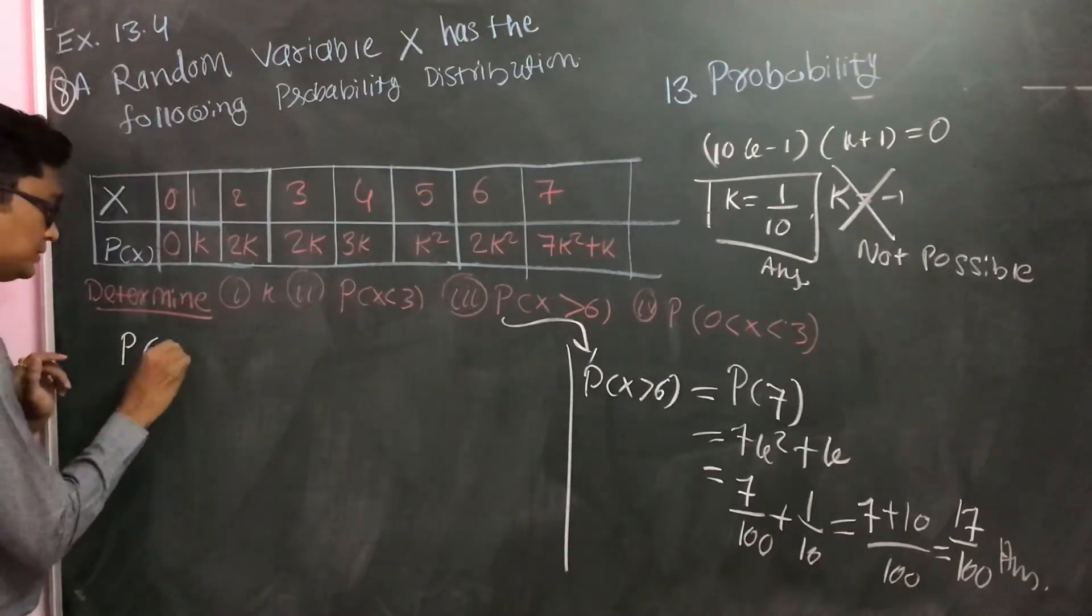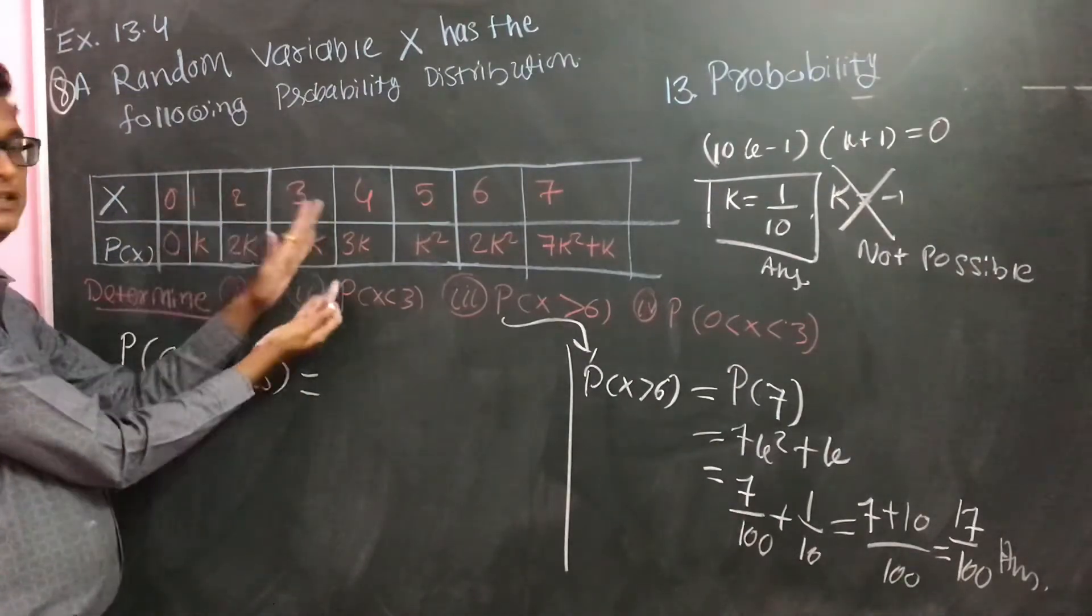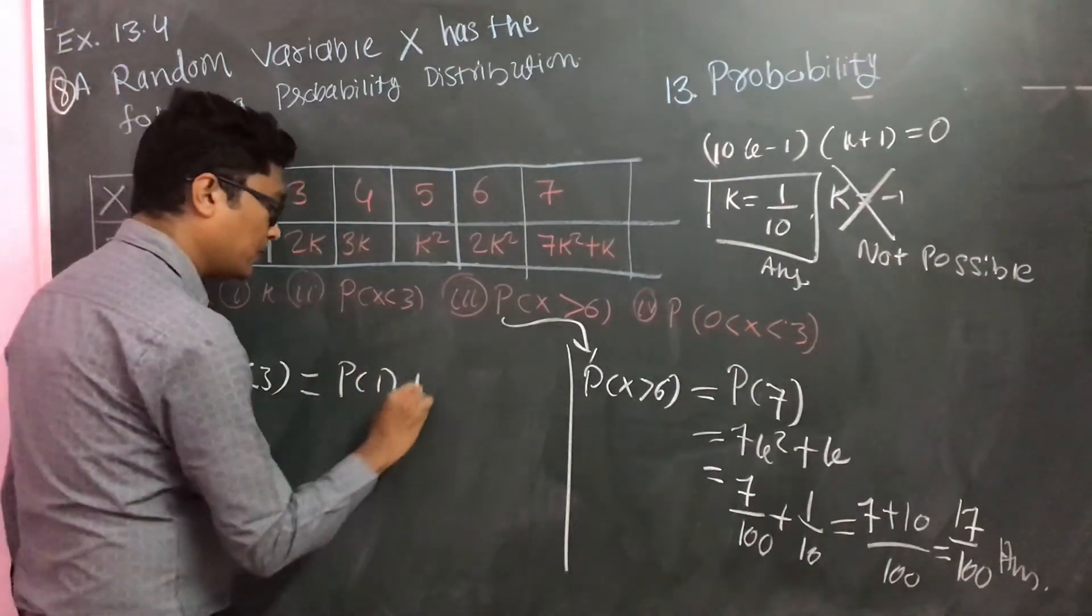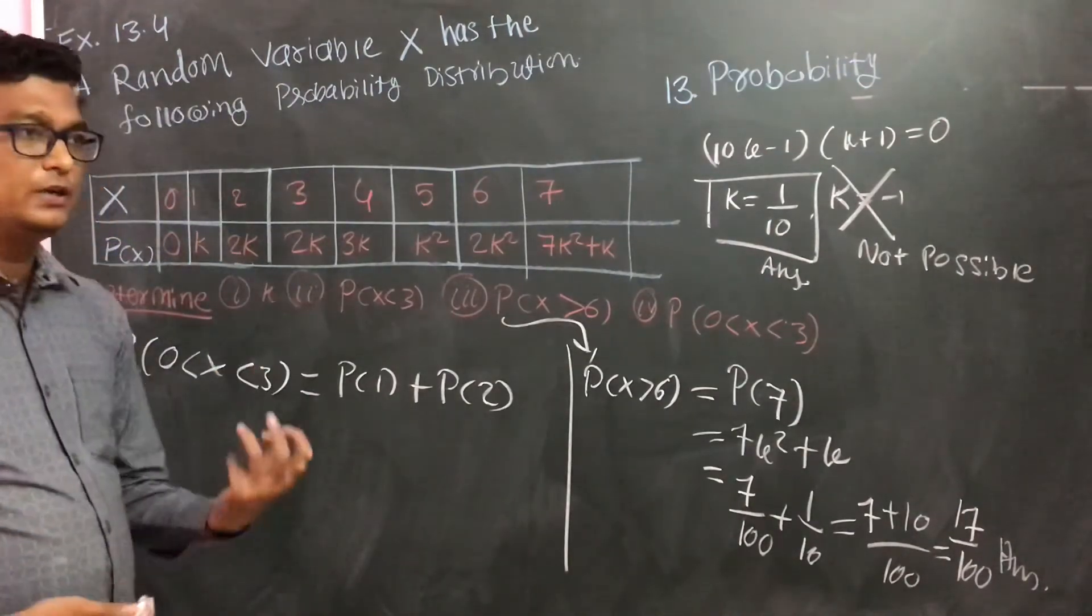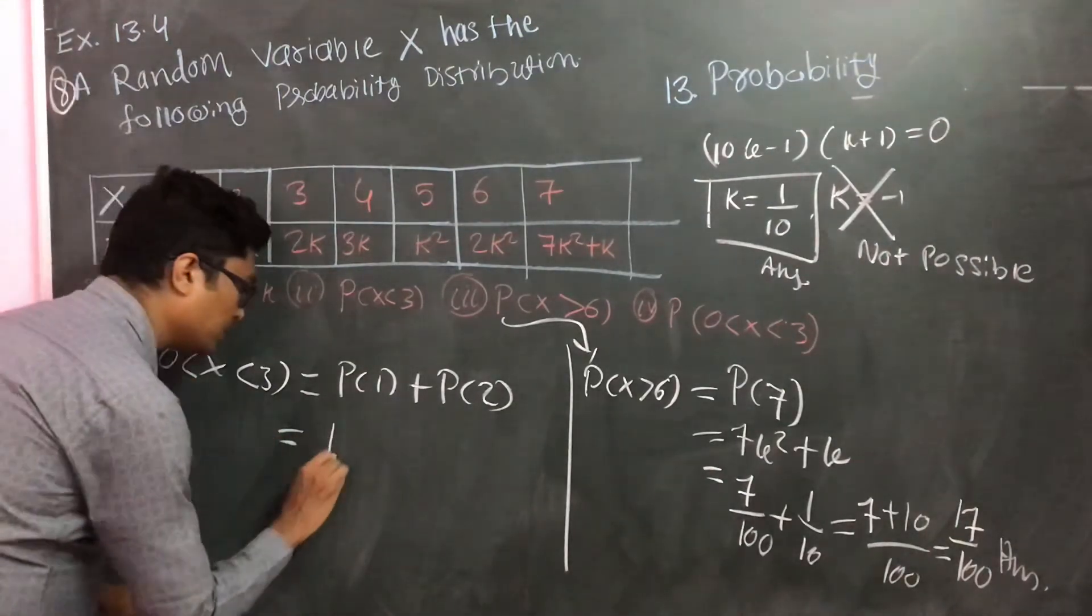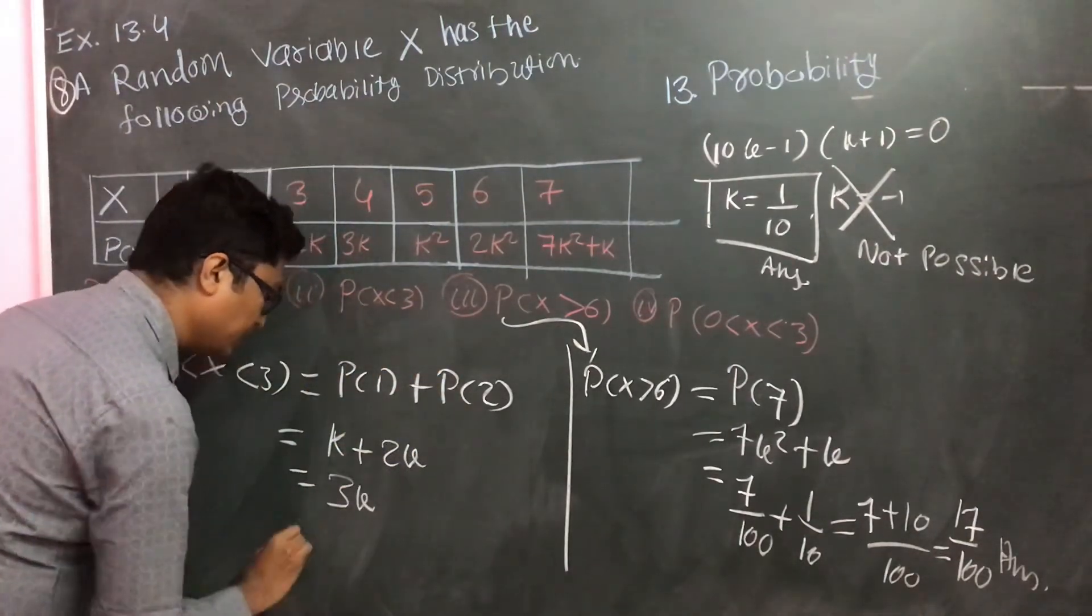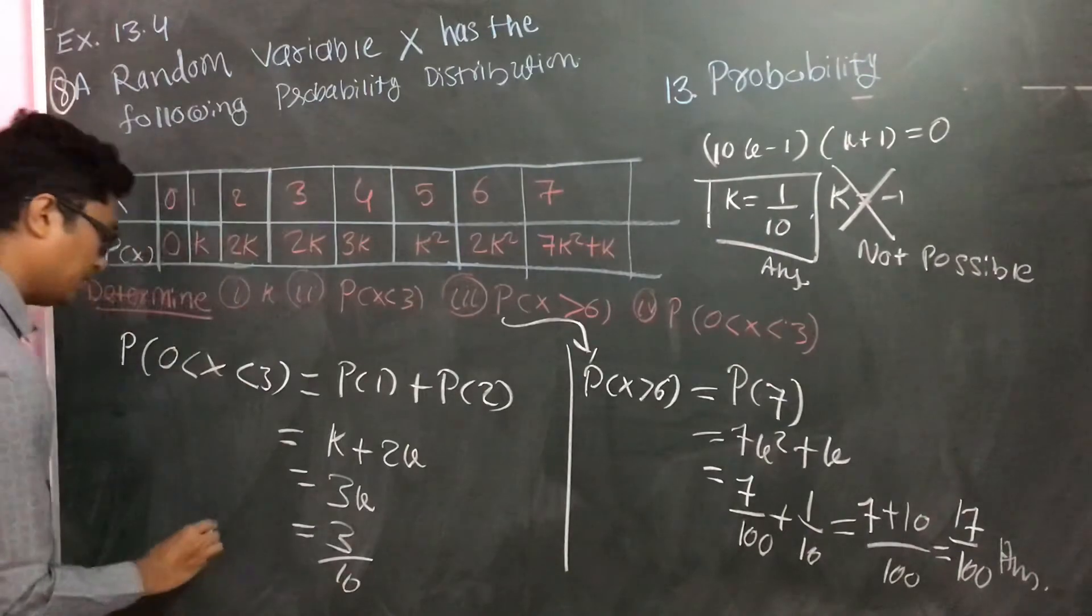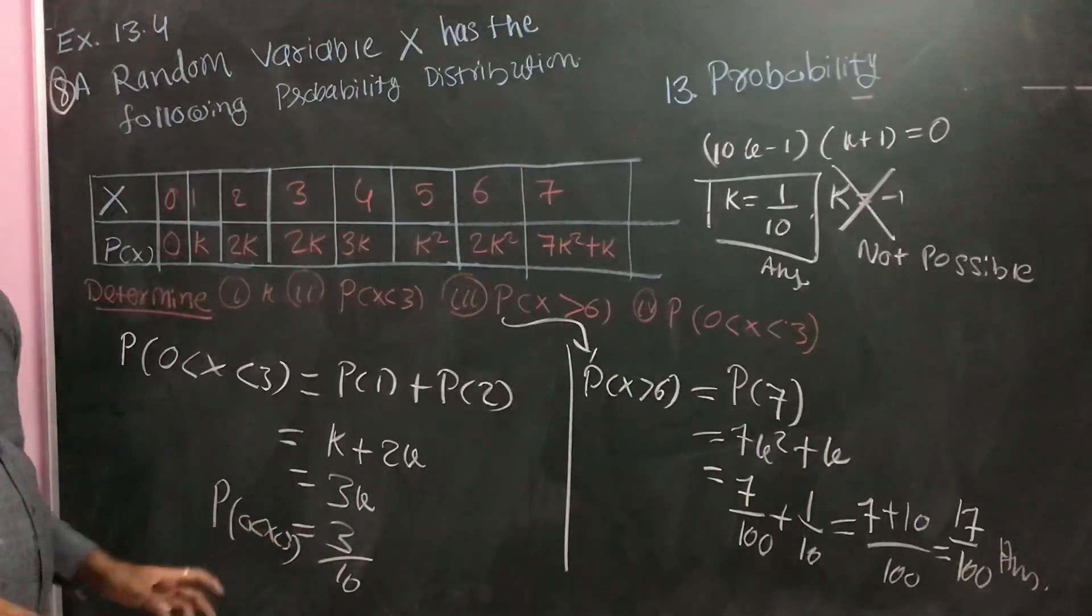In fourth, 0 less than X less than 3. Here you can see 3 from outside and 0 from outside, so that is P of 1 and 2. P of 1 plus P of 2. It is not easy, nothing is. In this type of question, you just need to practice 1 or 2 times and then you can solve it. Probability of 1 is k, and probability of 2 is 2k, so the answer is 3k. K value is 1 by 10, so 3 by 10. This is the answer for 0 less than X less than 3. Thank you.